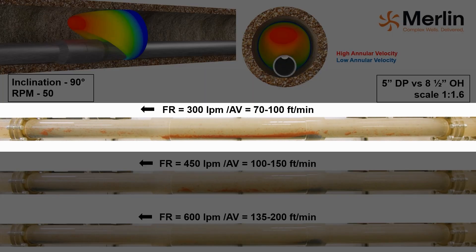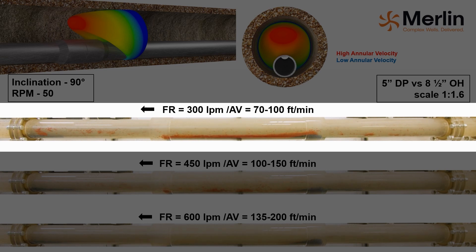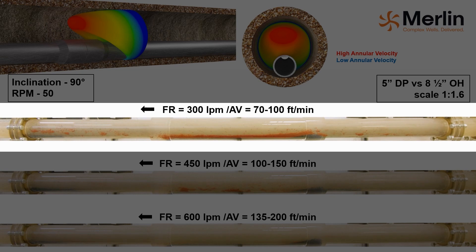At the lowest flow rate of 300 liters per minute, the cuttings accumulate in beds forming an annular restriction. The annular velocity in the in-gauge interval is approximately 100 feet per minute, while in the enlarged interval it drops to 70 feet per minute. It is also worth noting that extended periods of circulation with low or no rotation and an annular velocity of less than 100 feet per minute will increase the risk of barite sag.